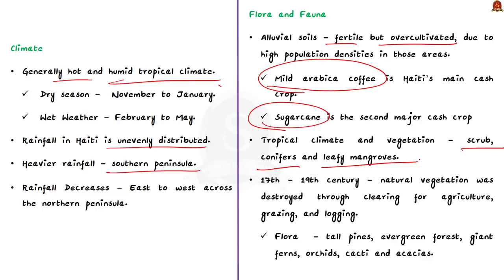From the 17th to 19th centuries, much of Haiti's natural vegetation was destroyed through agriculture, grazing, and logging. Some examples of remaining flora include tall pines, evergreen forest, giant ferns, orchids, cacti, and acacias. Most natural vegetation was destroyed by overgrazing, agriculture, and logging.